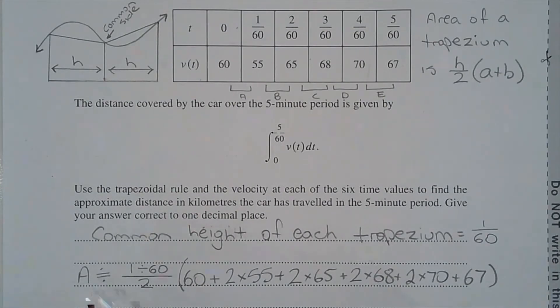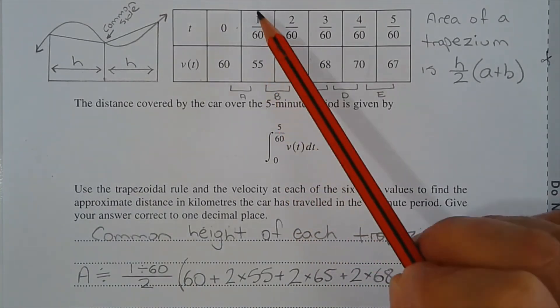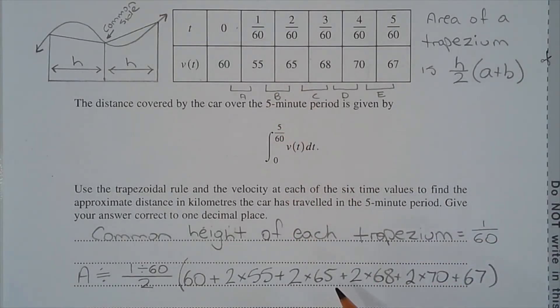Now the area is approximately equal to h over 2. So h is 1 divided by 60, and divide that by 2 outside of 60 plus 2 multiplied by 55, since that is one of the common sides, plus 2 multiplied by 65 plus 2 multiplied by 68 plus 2 multiplied by 70 plus 67.